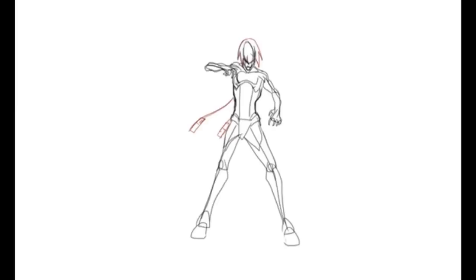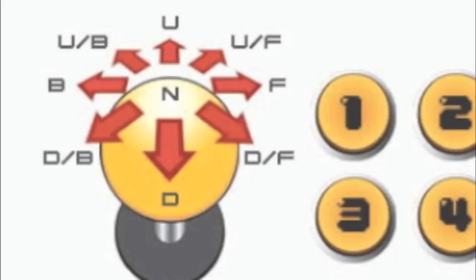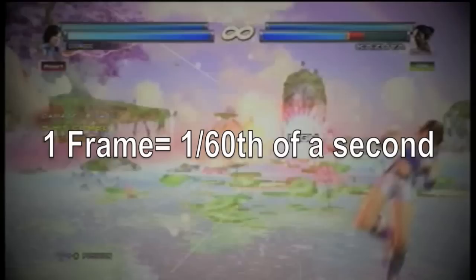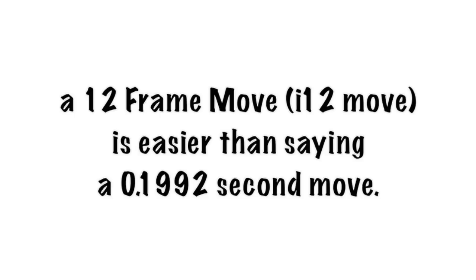A frame can be defined as a picture or as a unit of time. When you show many pictures together sequentially, you have an animation. So basically every move in Tekken is a pre-made animation that you trigger with button inputs. Usually fighting games run at 60 frames per second, meaning that each frame is 1/60th of a second, or 0.0166 seconds. But because that's not an easy number to work with, you talk in terms of frames instead.